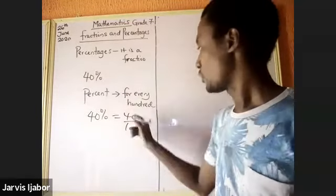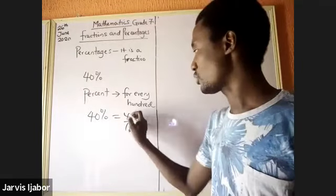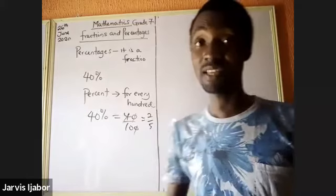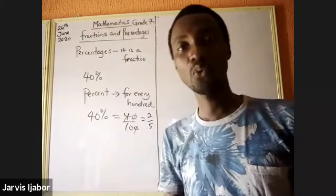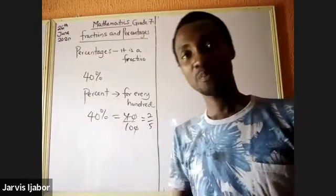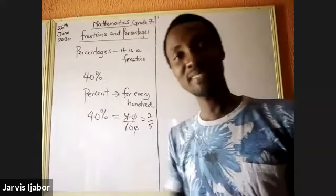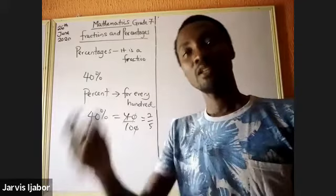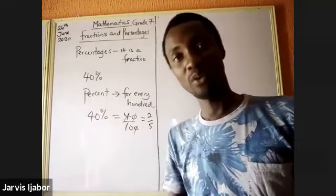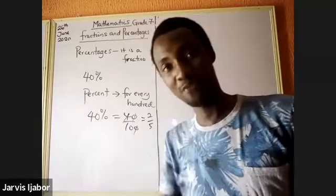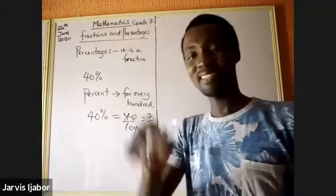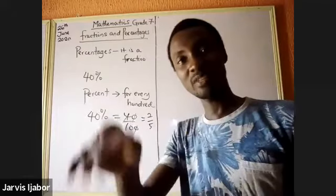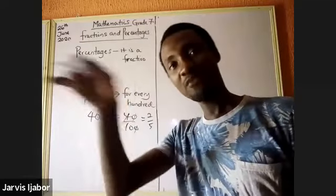When you reduce to the lowest terms, you'll get the fraction as well. That's why sometimes an exam will tell you to convert to a fraction. For example, 25 percent means 25 over 100. And 100 percent means 100 for every 100.